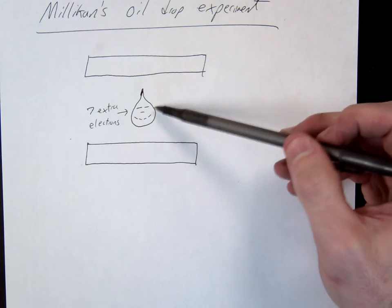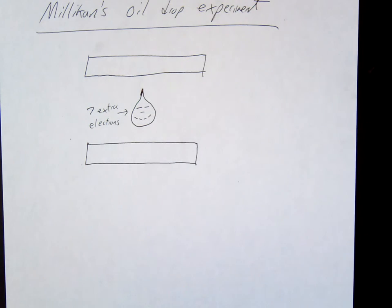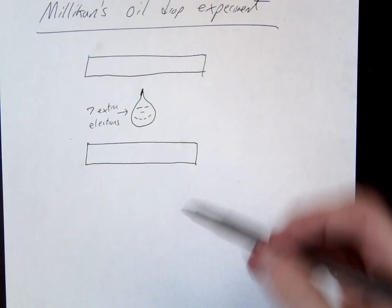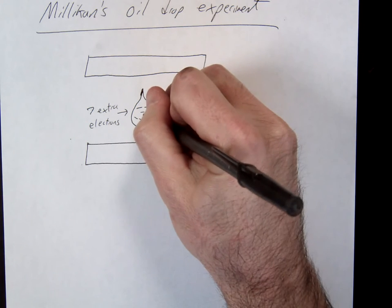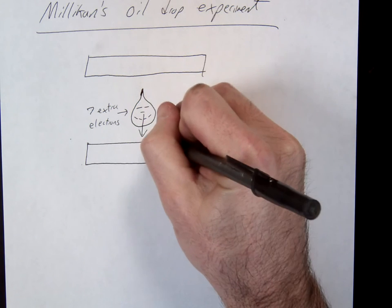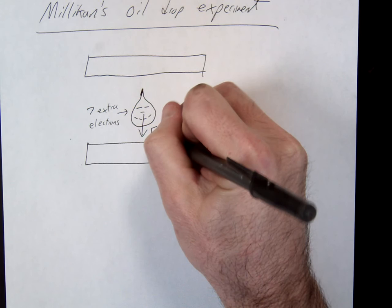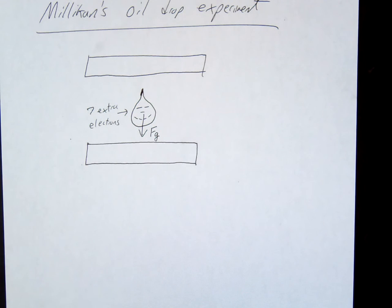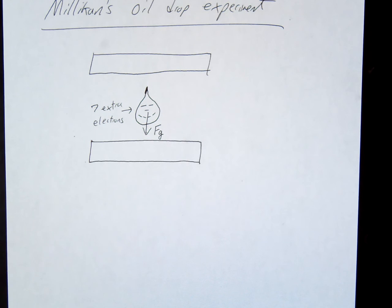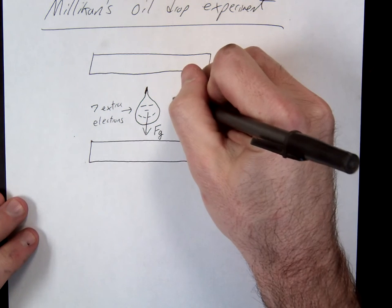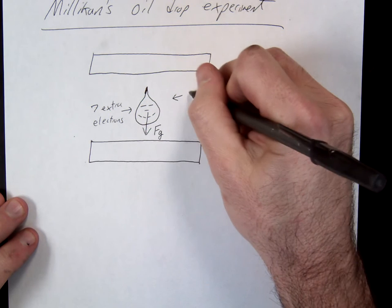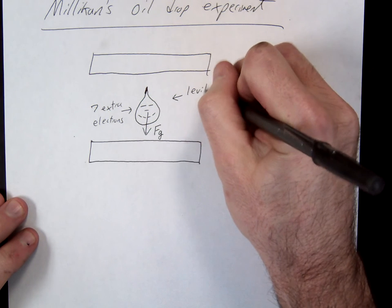So anyway, if we just took a drop of oil and let it go, what would it do? Fall to the ground — because there's a force of gravity pulling it down. So what Milliken wanted to do is he wanted the oil drop to levitate. So his goal or sub-goal was to levitate the oil drop.